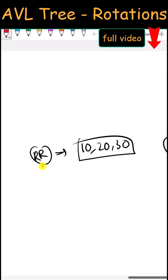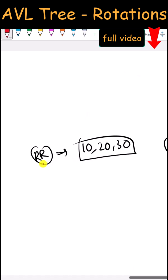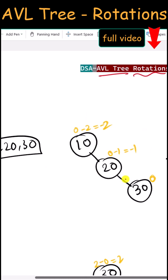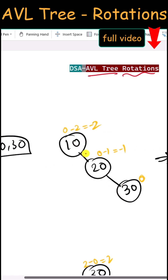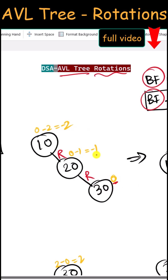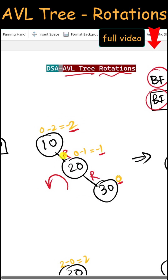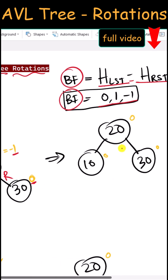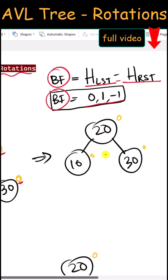First, let's talk about the right-right rotation. This is an example of the right-right rotation because this node is balanced, this is also balanced, but this node has a balance factor of negative 2. To balance this we have to rotate it anti-clockwise, and after the rotation you can see our tree is balanced.